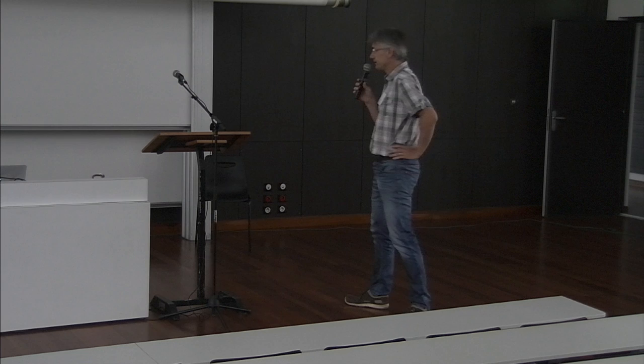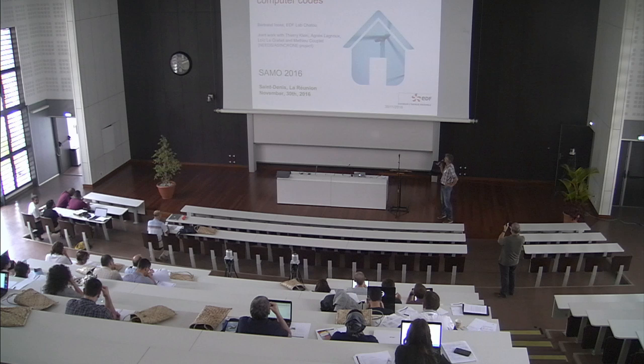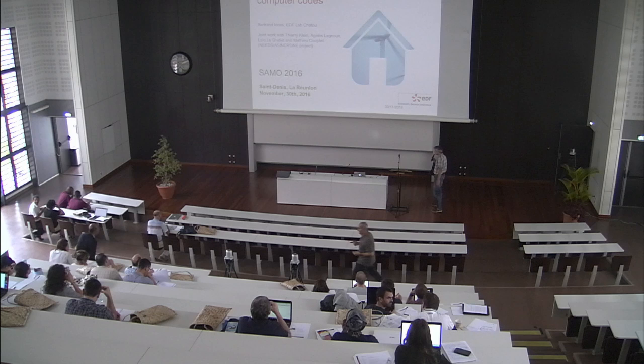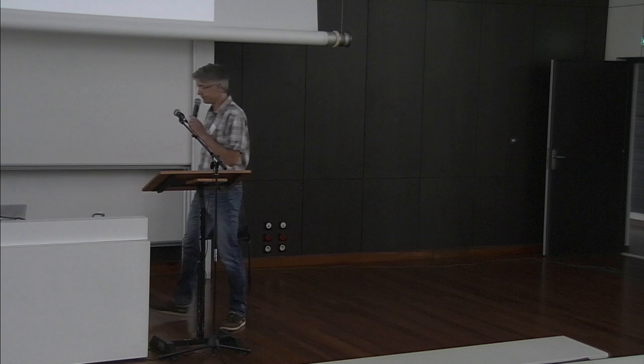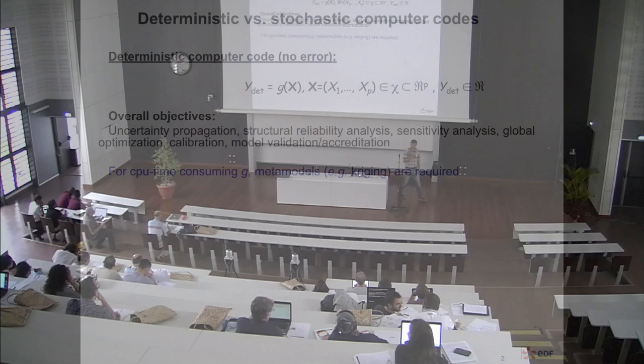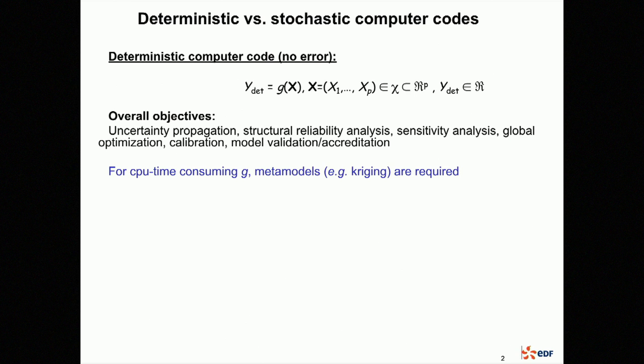This work was done in 2014 in the framework of the project Asynchrone, a project financed by the French nuclear industry. Usually in sensitivity and uncertainty analysis we deal with what we call computer codes, and most often they are deterministic. Deterministic means that for the same inputs of the function G — G being my code — we always get the same output.